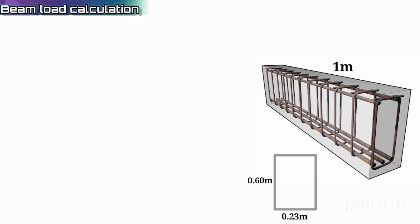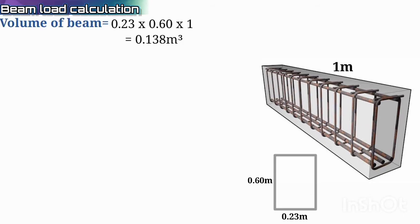The length of the beam is one meter and the dimensions of the beam are 0.60 meter multiplied by 0.23 meter. So how can we calculate the load of the beam? First of all, we have to determine the volume of the beam, which is equal to 0.23 × 0.60 × 1, which equals 0.138 cubic meters. That is the volume of the beam.